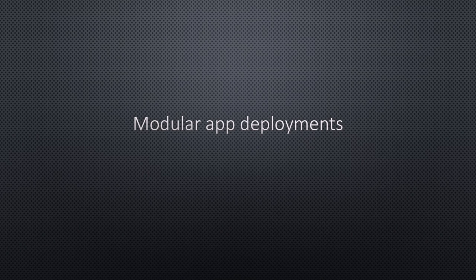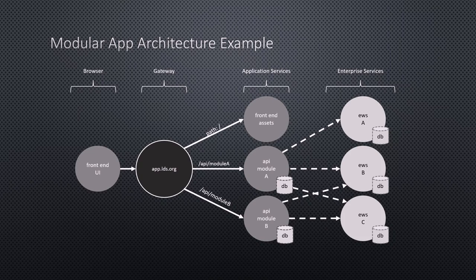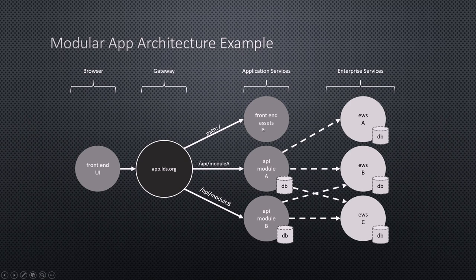Let's switch gears and jump into deploying a modular app. Let's say we've created our application or are starting a new one and we've broken it up into a whole bunch of different parts. Here's an example architecture: you've got the front end sitting over here in your browser, there's this gateway piece I'm going to talk about a lot, and then we have some other different microservices or applications running back behind the scenes. The gateway is really cool — it's the glue that puts all of the different applications together.